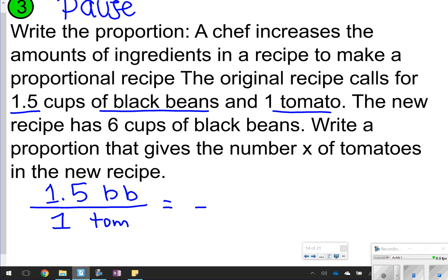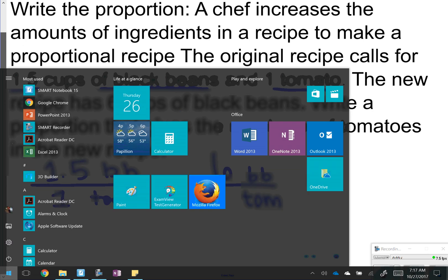The new recipe has six cups of black beans. Since it's talking about black beans, and I already put black beans on the top on the left side, I'm also going to put the six cups of black beans on the top on the right side, and X tomatoes will go here. So your answer should be 1.5 black beans over 1 tomato is equal to 6 black beans over X tomatoes.